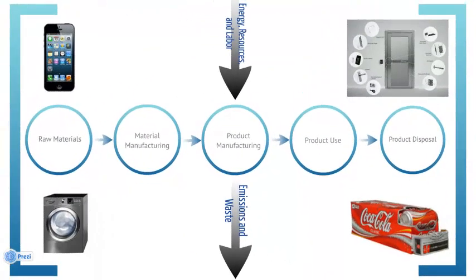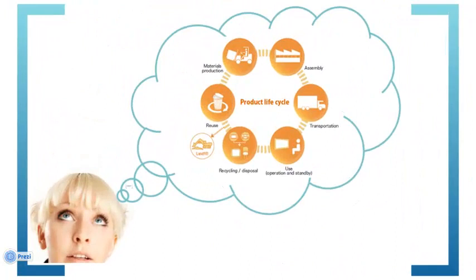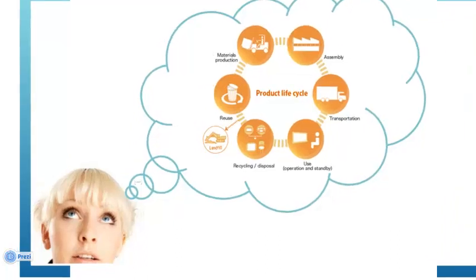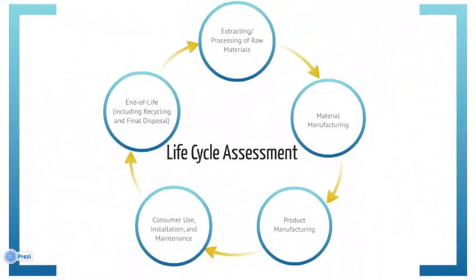The blue arrows of this graphic represent transportation. As product designers, you need to understand the life cycle of a product in order to design the product to be more sustainable. Sustainable product development is characterized by the concept of life cycle thinking and the integration of sustainability into the product design and development process. Life cycle thinking takes into account all the stages of the product life cycle with the aim to reduce the impacts of the products. Life cycle assessment is a method for identifying the environmental impacts of a product, process, or activity over its entire lifespan.